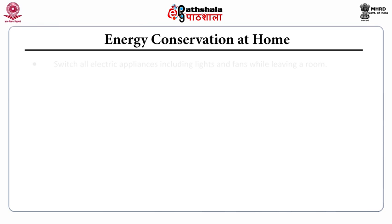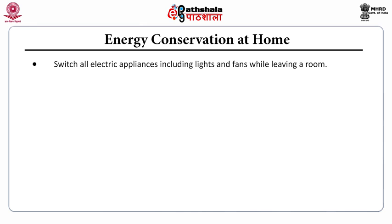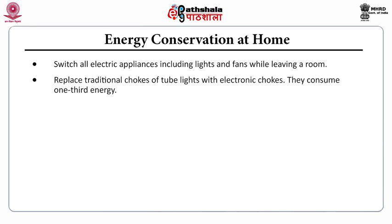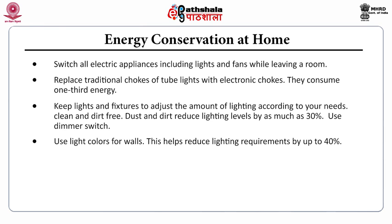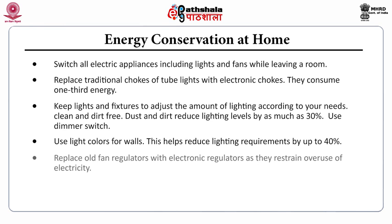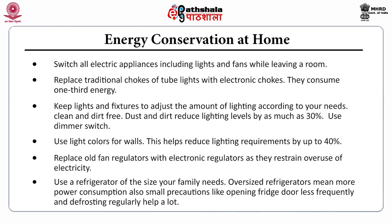Energy conservation at home: switch off electric appliances including lights and fans while leaving a room. Replace traditional chokes of tube lights with electronic chokes — they consume one-third the energy. Keep lights and fixtures adjusted to the amount of lighting needed. Dust and dirt can reduce lighting levels by up to 30%; use a dimmer switch. Use light colors for walls — this reduces lighting requirements by up to 40%. Replace old fan regulators with electronic regulators. Use a refrigerator of the size your family needs, as oversized refrigerators consume more power. Small precautions like opening the fridge door less frequently and defrosting regularly also help reduce energy consumption.